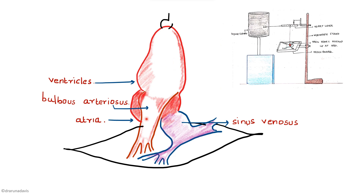There are different methods by which this experimental setup can be done. In some experiments the systole will be recorded as a down stroke, but in other setups it may be recorded as an up stroke. That is why I have given two versions of the cardiogram. Version 1 uses Starling's heart lever and this is version 2.